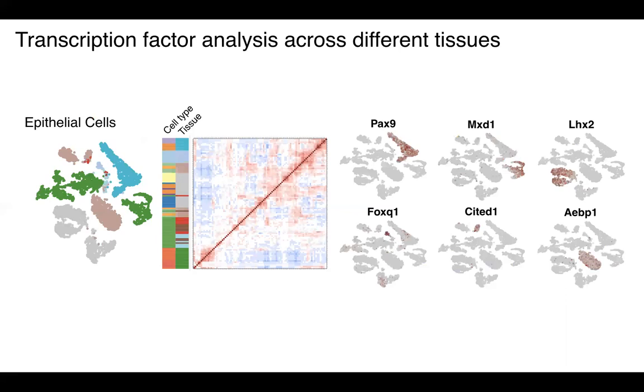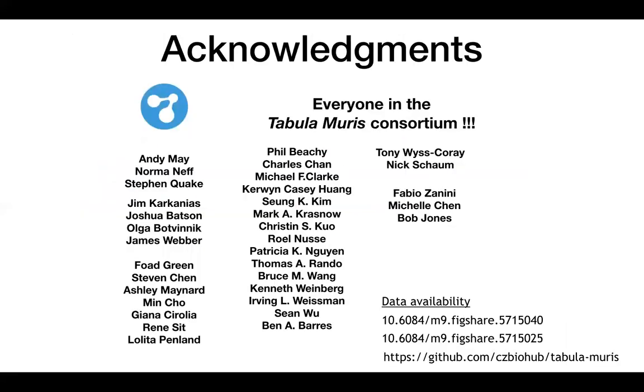I believe with that I am done with the presentation. I'd be happy to take any questions. I would like to thank all the people at Biohub that were part of this project, Andy May, Norman Neff, Steve Quake, and Jim Karkanias in particular. I'd like to thank everybody in the Tabula Muris consortium and specifically Tony Wyss-Coray and Nick Schaum. I would like to also highlight that our expectation for this project is that the scientific community downloads and interacts with this data further, analyzes them, and mines them for interesting biological hypotheses that they can pursue. The data are available on Figshare and all the code used in this project is also available on GitHub.